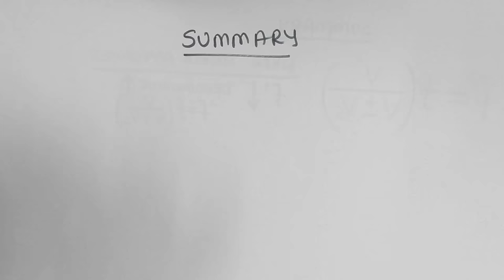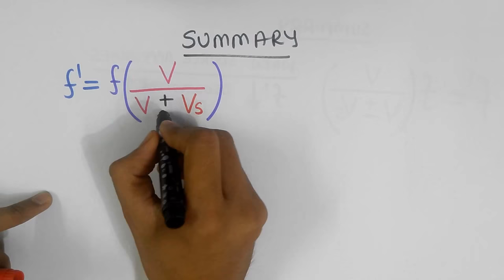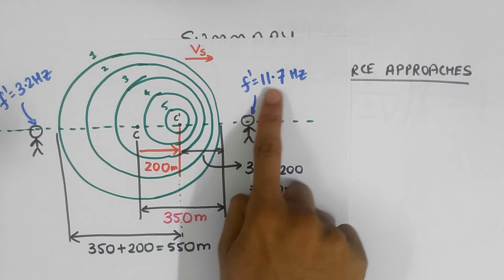So, let's summarize the formula. The apparent frequency, F Prime, is F times V divided by V plus or minus Vs. When the source approaches the listener, the registered frequency should increase. Hence, the denominator should decrease, right?